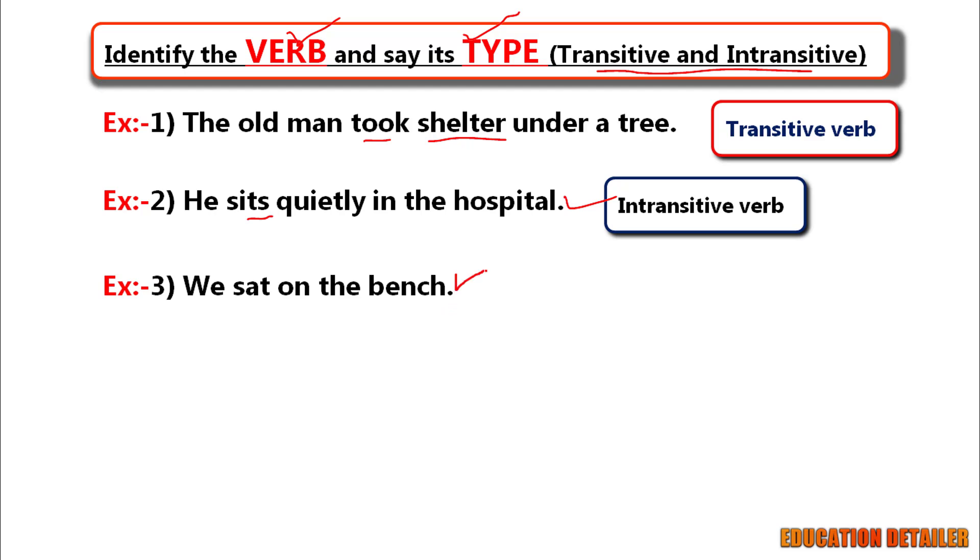We sat on the bench. The intransitive verb sat does not require an object to make sense. It makes sense on its own. Fourth one.